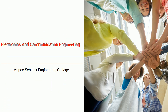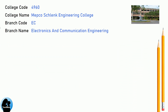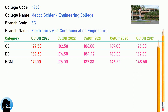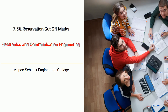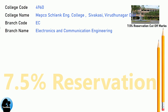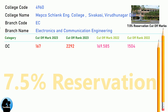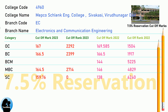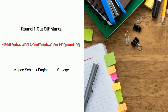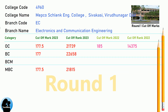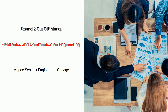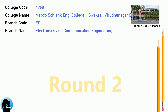Cut-off for Mepco Schlenk Engineering College in Electronics and Communication Engineering. 7.5 Reservation Cut-off, Round 1 Cut-off, and Round 2 Cut-off for Mepco Schlenk Engineering College in Electronics and Communication Engineering.